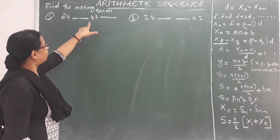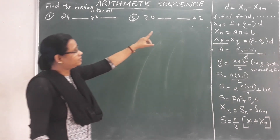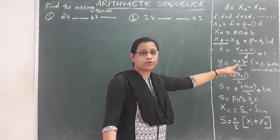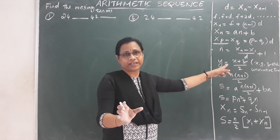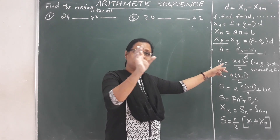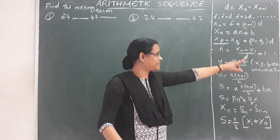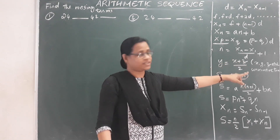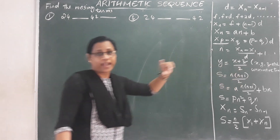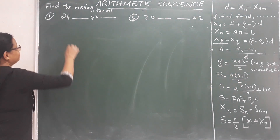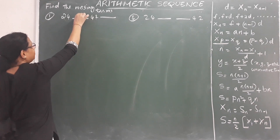New problem: we have the sequence 24, dash, 42. There are two missing terms. We have learned that for three consecutive terms x, y, z in AP, the middle term y equals (x plus z) divided by 2.